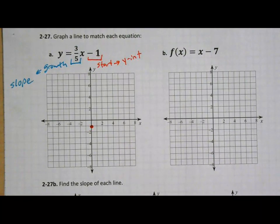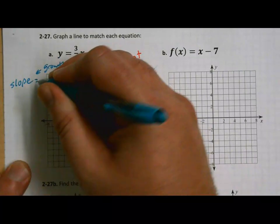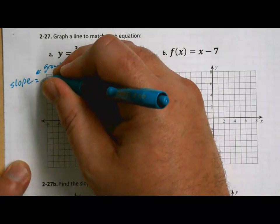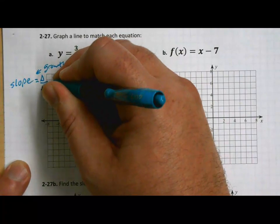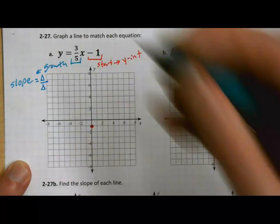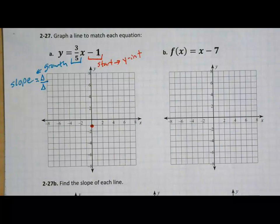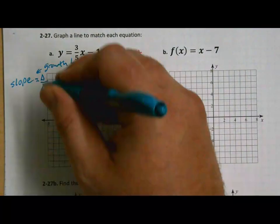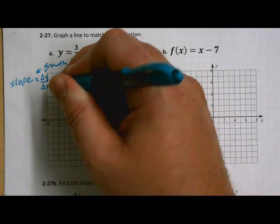Don't forget what slope is — repetition helps us remember. Slope is change in something over change in something. You've probably written it down several times now. It is change in y over change in x.